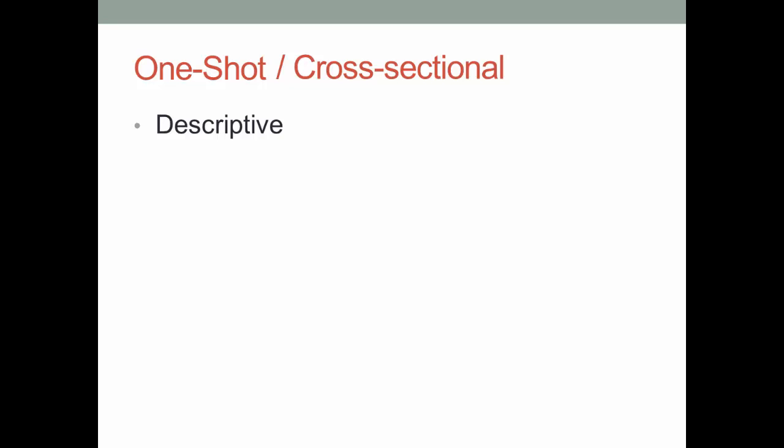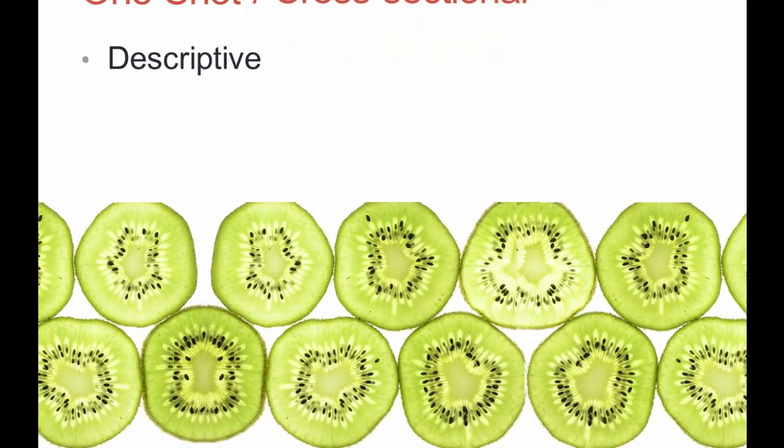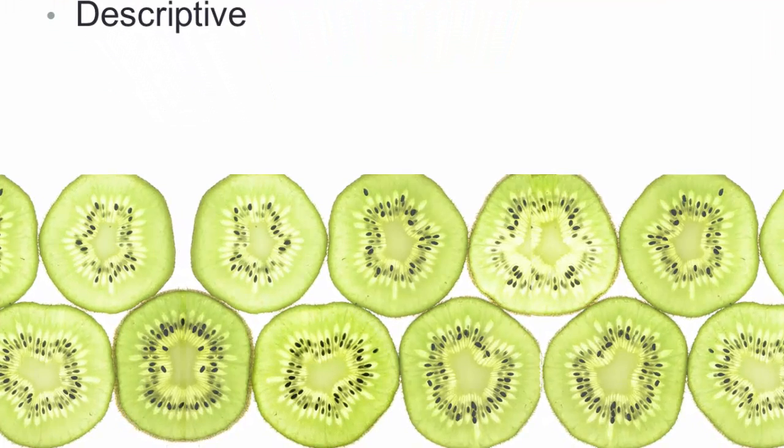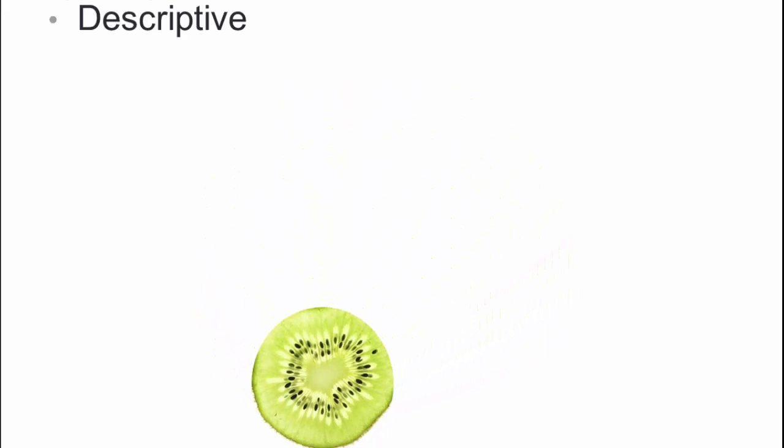To understand the cross-sectional part of the name, assume you are slicing up some kiwi fruit. You take one of the many slices, a cross-section of the fruit, and examine that in detail. Now that slice may differ from the one before it and the one after it, but you just have that one slice to examine and draw conclusions from.